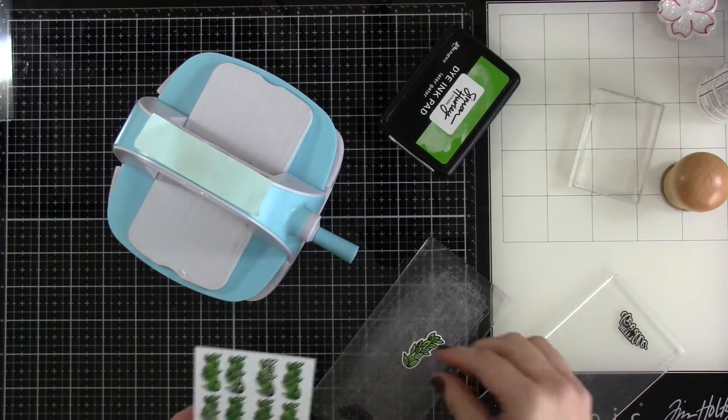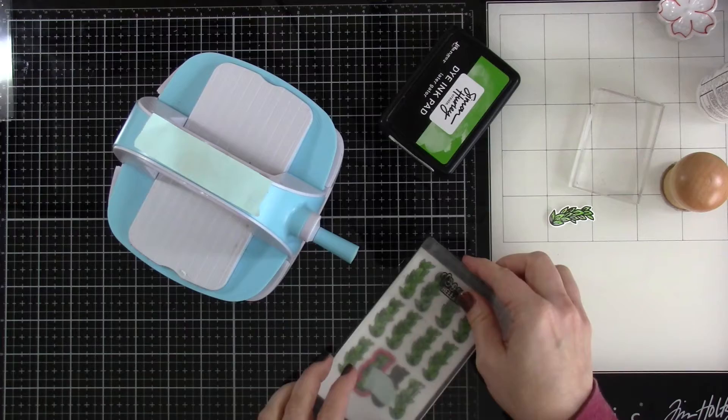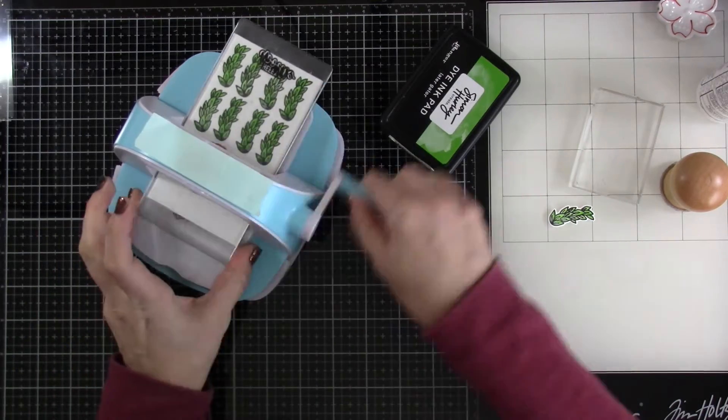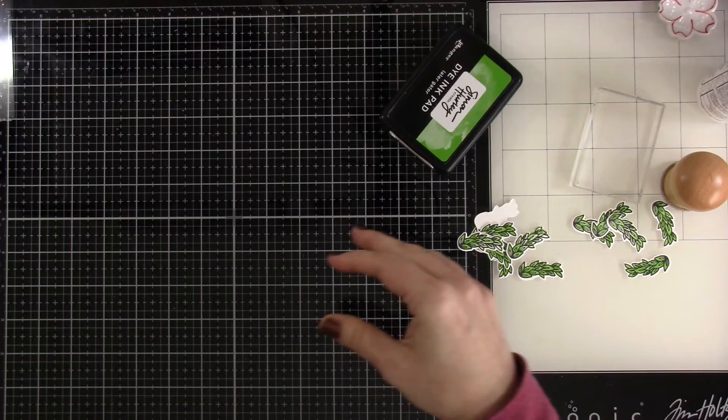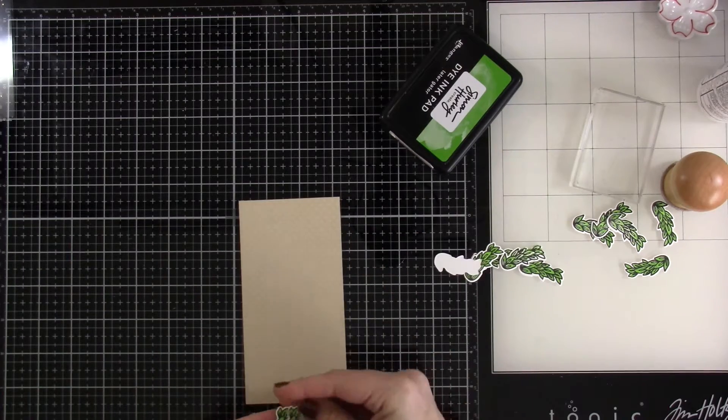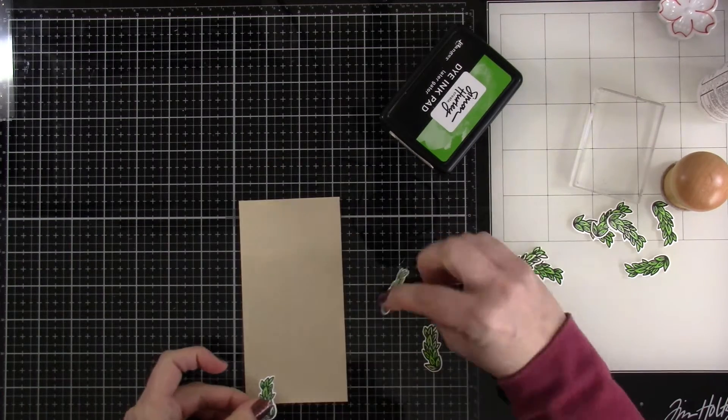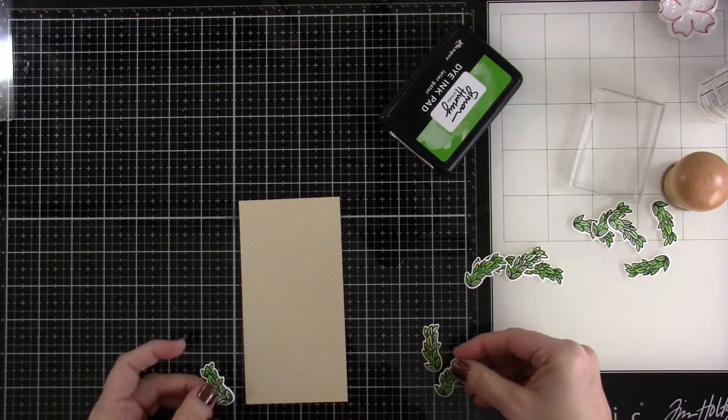Like I said, we're making two mini slim line cards with this one. So once those are all cut out, then I'll bring in my cardstock. So this piece of cardstock is some of that Swiss dot cardstock that came in the kit. It's a tan color. It's really pretty.